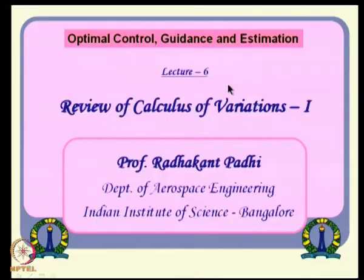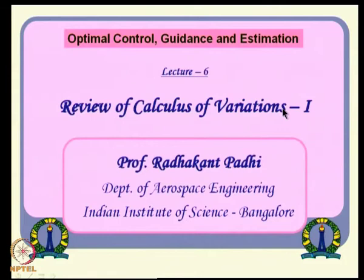Hello everybody. Let us continue our lecture series for this course, Optimal Control Guidance and Estimation. This is lecture number 6, where we will review some calculus of variations concepts. This is a two-part lecture series; the first lecture will be taken now and then we will generalize some of the concepts in the next lecture. One very strong backbone of optimal control theory relies on this calculus of variations approach.